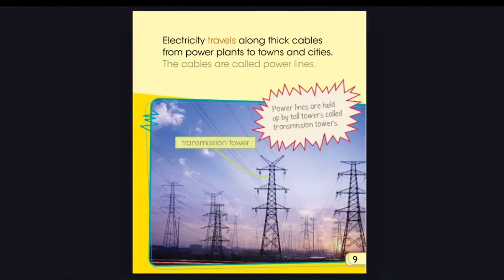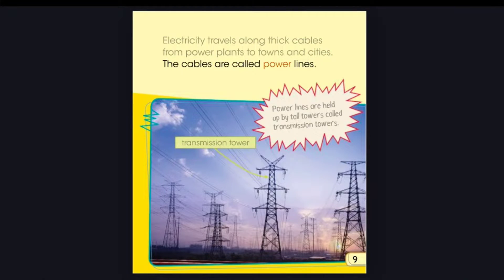Electricity travels along thick cables from power plants to towns and cities. The cables are called power lines. Power lines are held up by tall towers called transmission towers.